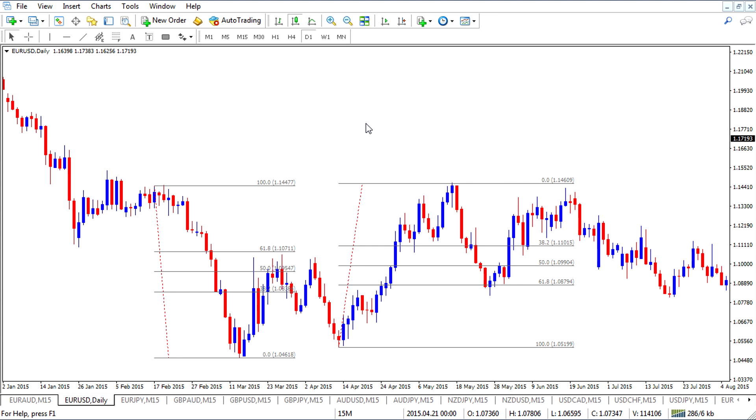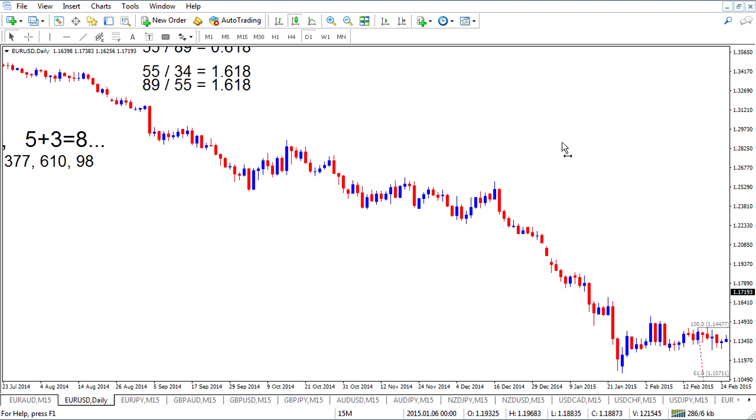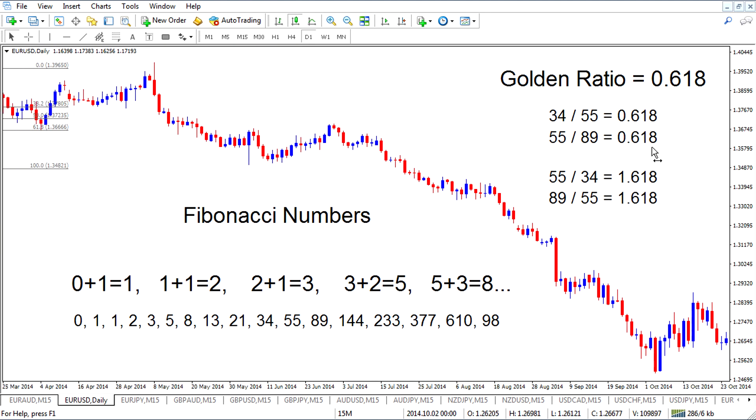And this is a pullback that we're going to see in the markets over and over again. It's so common that every trader generally knows about these Fibonacci numbers. They may not know what the sequence is, where the numbers come from, but the 61.8% retrace is almost ingrained in every trader's mind. Now the opposite is 38.2%. So we have a movement and a pullback of 61.8%, and the remaining space is 38.2%.